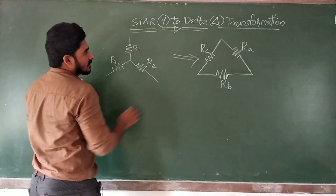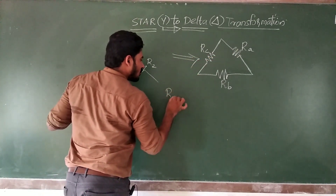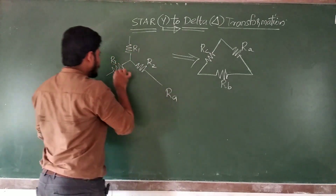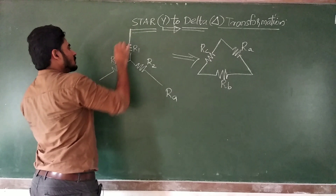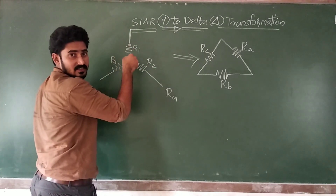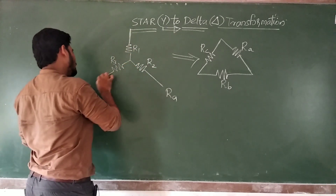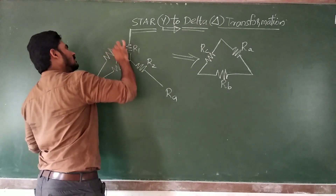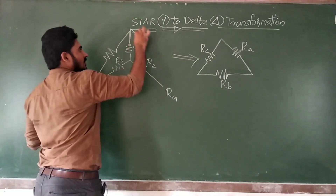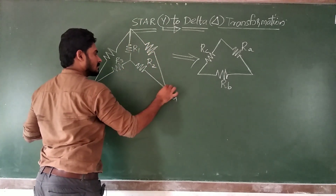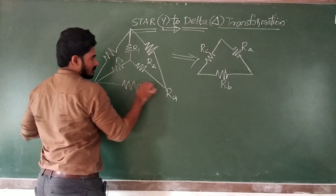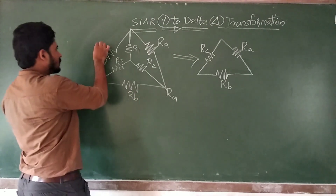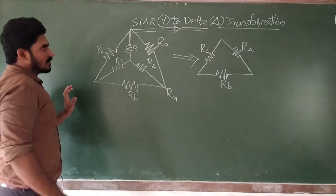So now let's write the first one — Ra. How can you find out the value of Ra? For the sake of understanding, I am drawing a delta connection here itself within the star connection. This is R3. So I am converting this star into delta here itself. This is the delta connection — the name is Ra here, the name is Rb here, and here the name is Rc.